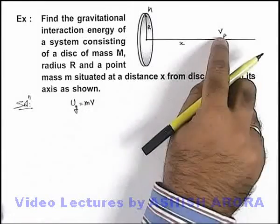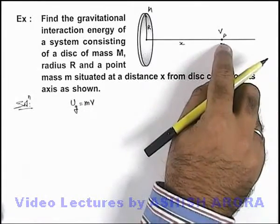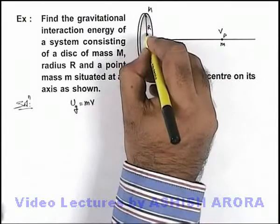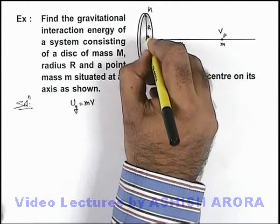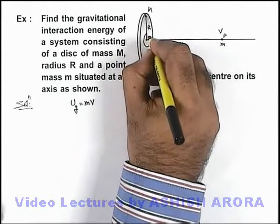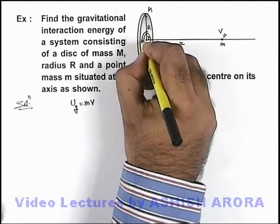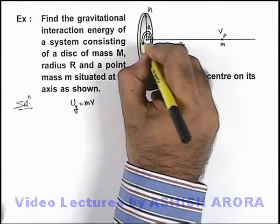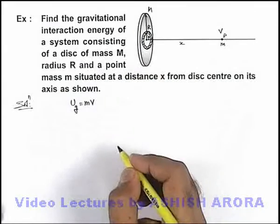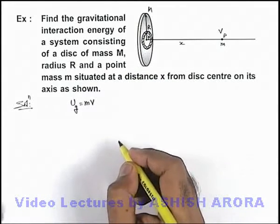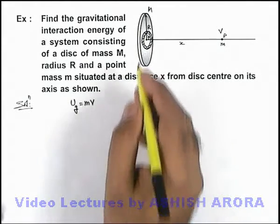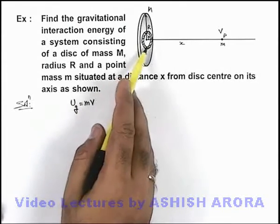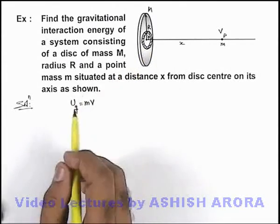Now to calculate the value of gravitational potential at P due to the disc, we need to take small elements within the disc. At a radius y we consider an elemental ring within the disc surface which is of width dy. So here we can find out the mass of this elemental ring.